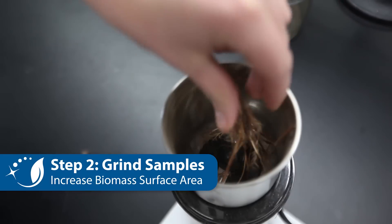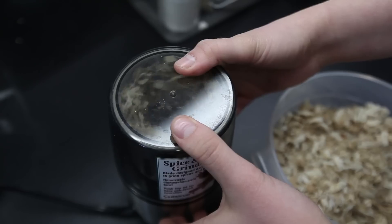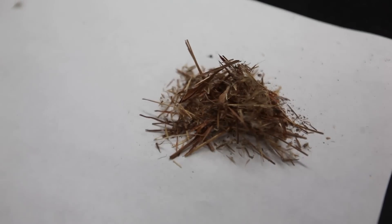The next step of the lab is to grind the biomass samples into small particles and add them to your test tubes. A standard coffee or spice grinder works well for this purpose. Here you see it go to work on the samples we collected, even cardboard. The goal is to increase surface area.